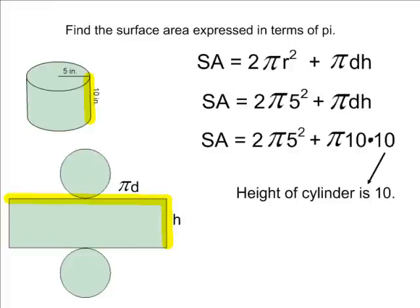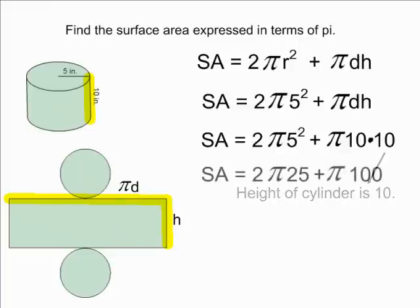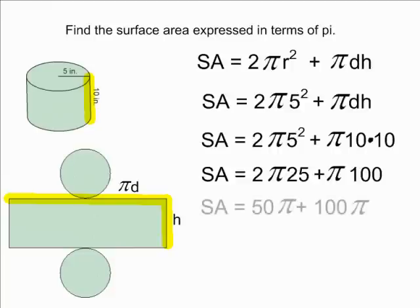After you have substituted all known values for the radius, the diameter, and the height, we are now ready to solve in terms of pi. For the first part of our equation, simply square the radius. 5 to the second power is 25, and then multiply 25 by 2, which will give us 50 times pi, which is the combined area of the two circles.